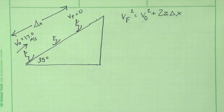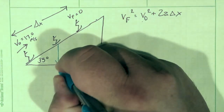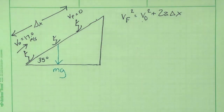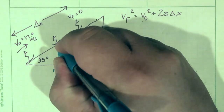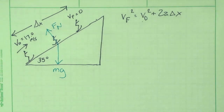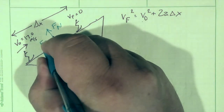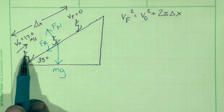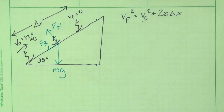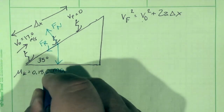So let's draw the forces which are acting on the snowboarder. First off, we have the weight force, mg. Then we have the normal force, which is perpendicular to the surface as always. And then we draw in the friction force. The friction force is going to be down the slope, because she is traveling up the slope. And we have a coefficient of kinetic friction of 0.185.